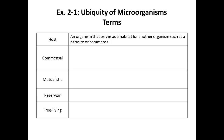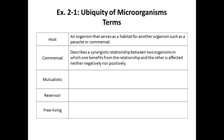A commensal relationship is one where both organisms share the same home and neither benefits nor is harmed negatively. Think of communism to help remember it — everyone is supposed to get equal. I don't think it's truly possible, but commensalism might really exist.